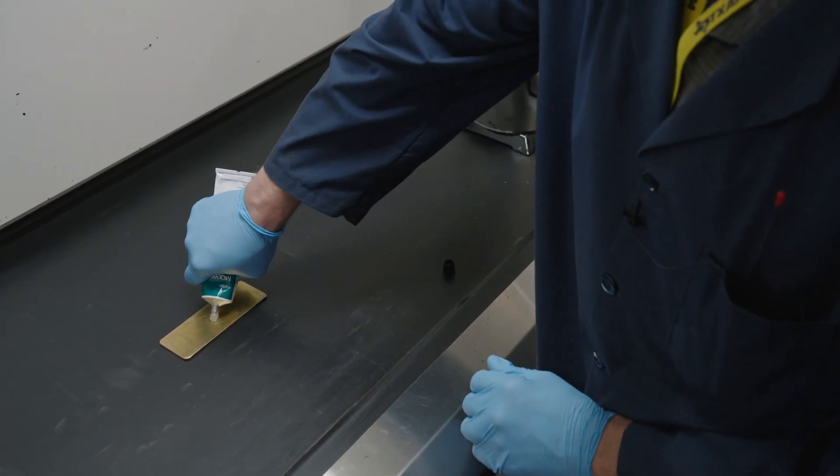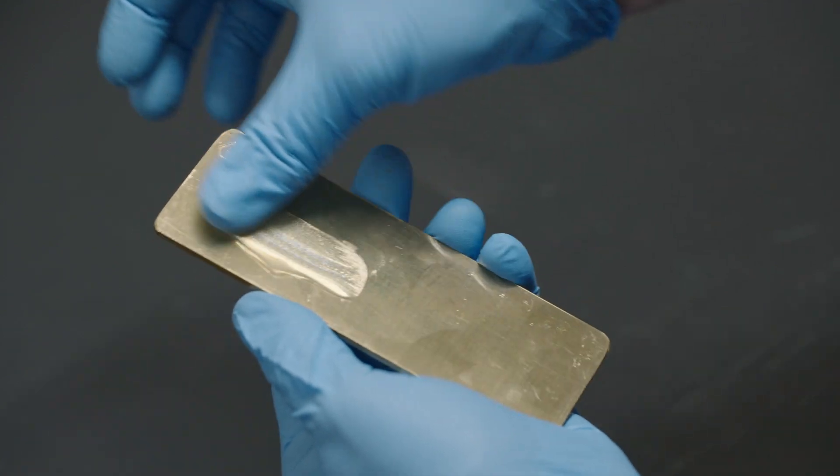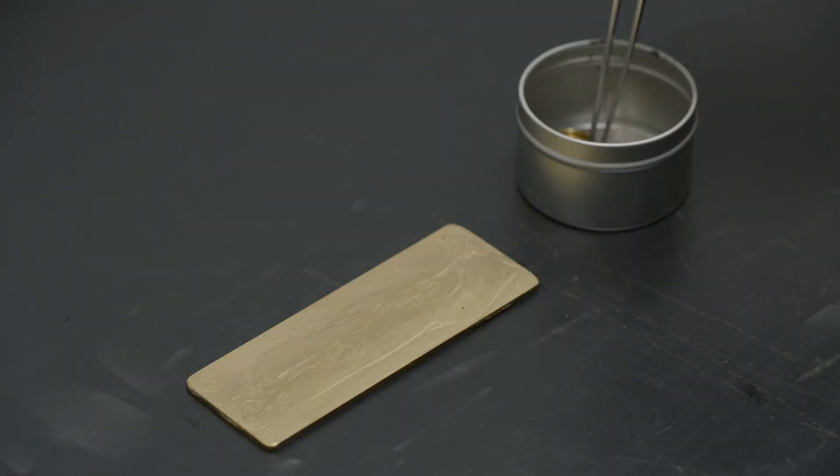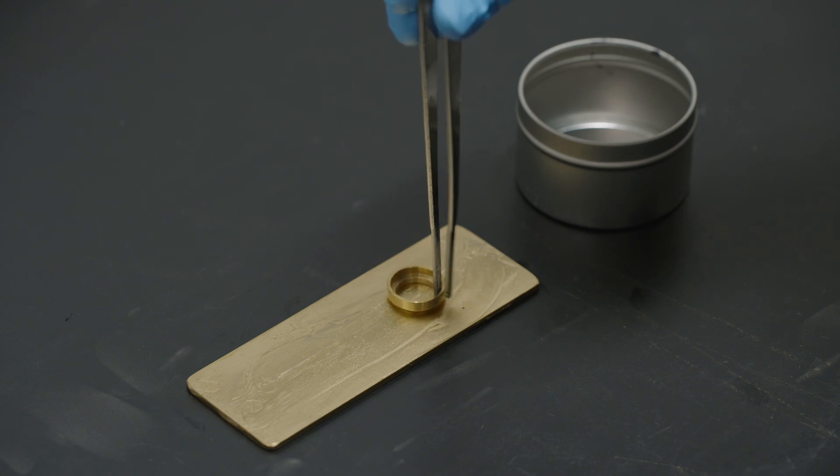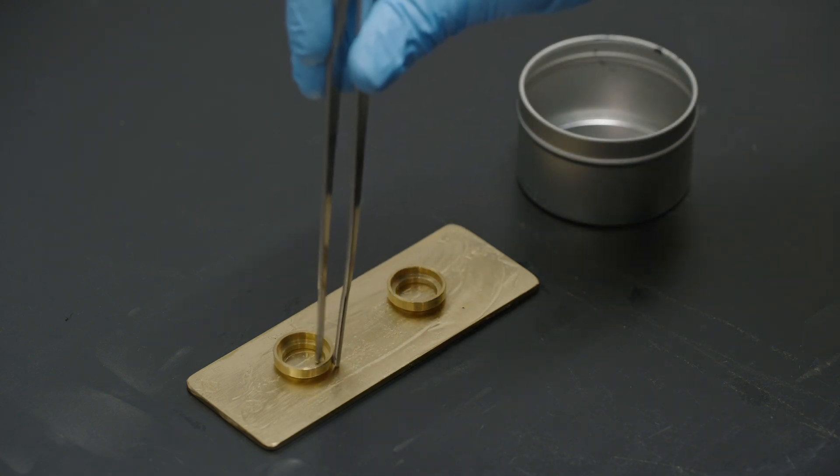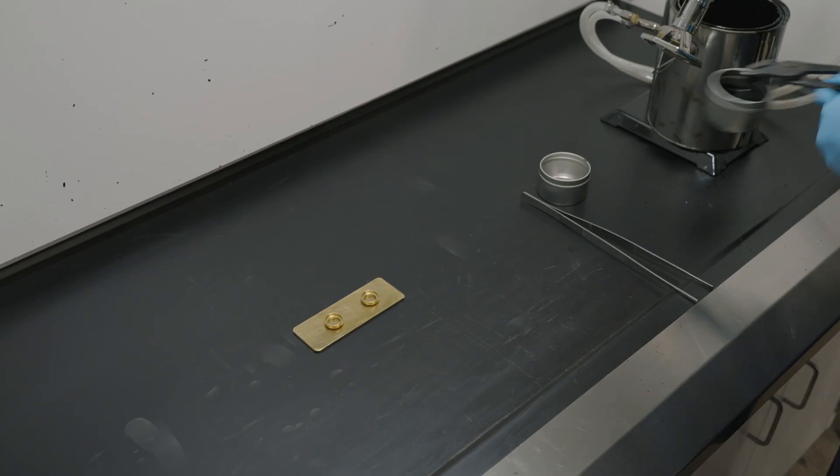Coat the pouring plate with a thin layer of release agent. Heat two brass rings near the pouring temperature of the sample and place them on the plate covered with the release agent. Do not heat the pouring plate.